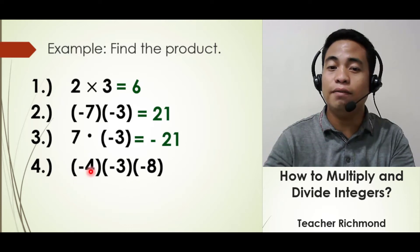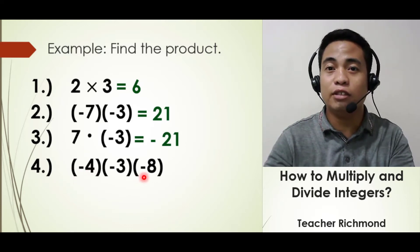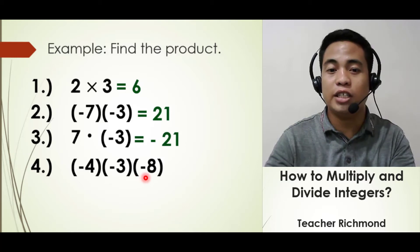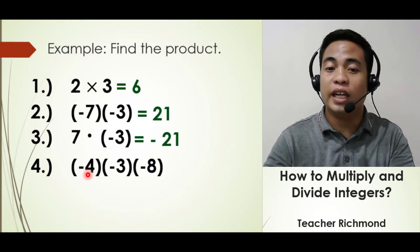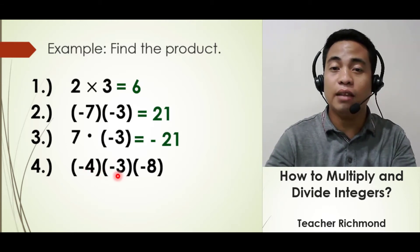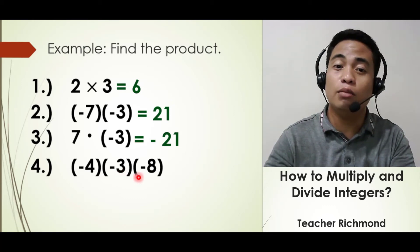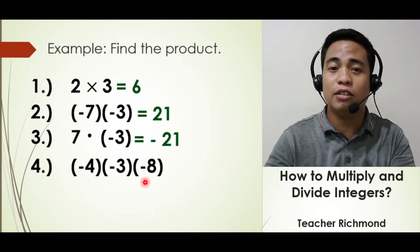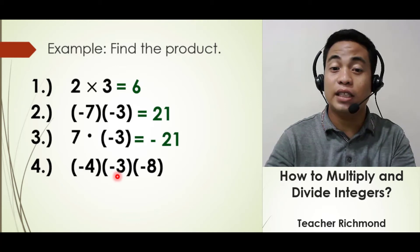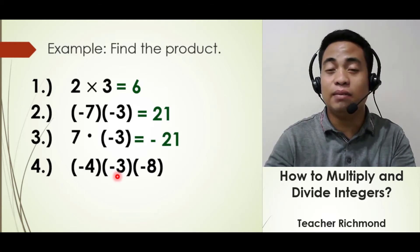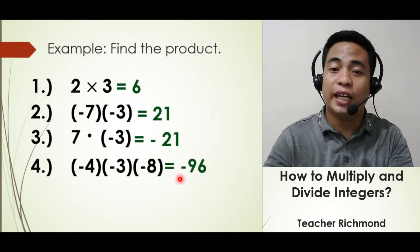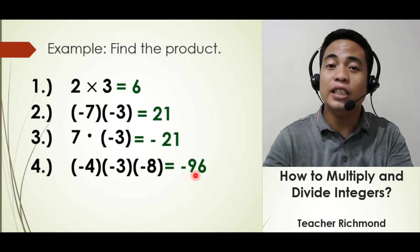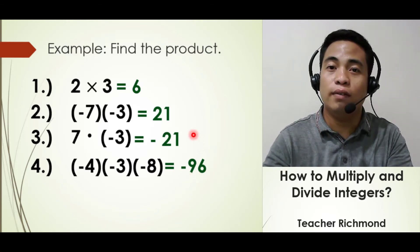Next, we have negative 4 times negative 3 times negative 8 — three integers to multiply. To do this, multiply the first two integers first. Negative times negative gives positive 12. Then multiply positive 12 by negative 8. Since these have unlike signs, the answer is negative 96. That is how you do the multiplication of three integers.